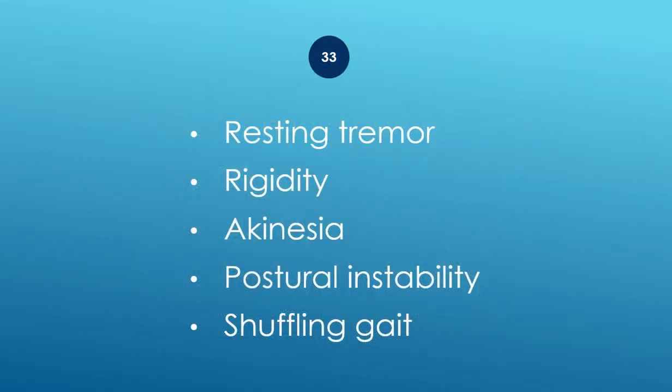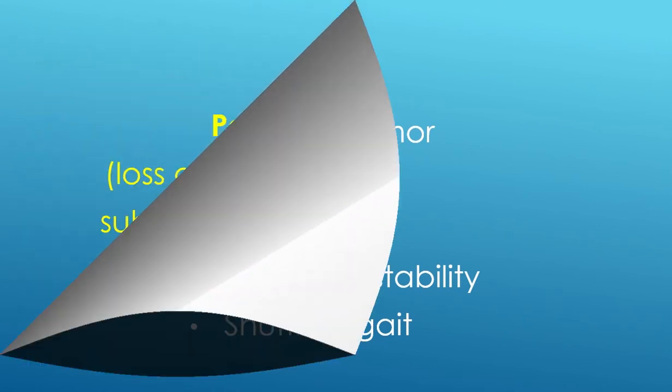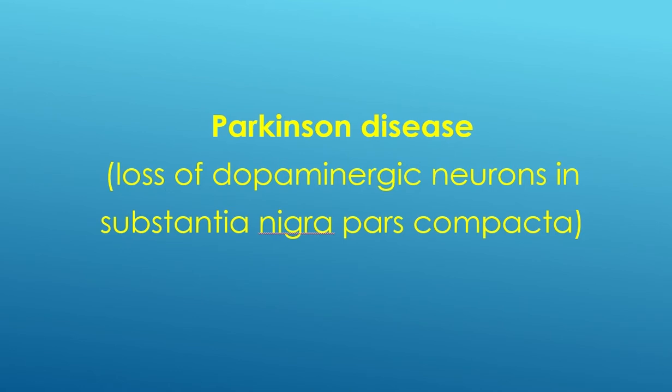Resting tremor, rigidity, akinesia, postural instability, and shuffling gait — Parkinson disease. Loss of dopaminergic neurons in the substantia nigra pars compacta.